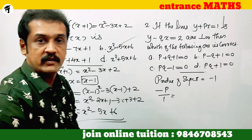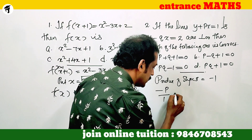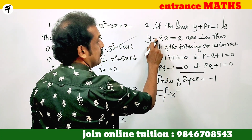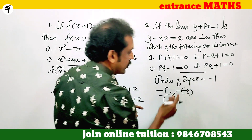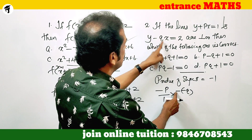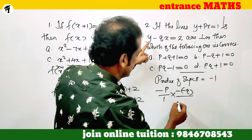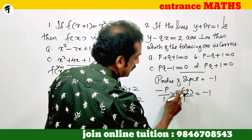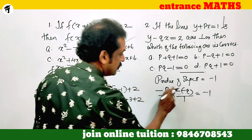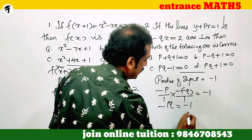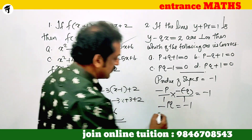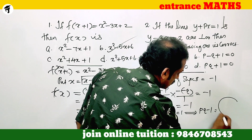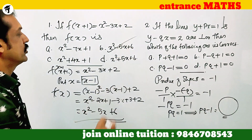Applying the condition, the product of the slopes equals minus 1. Working through the calculation, we get PQ equal to 1, which implies PQ minus 1 is equal to 0.